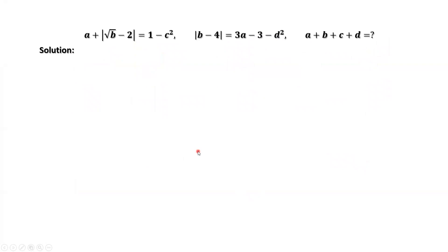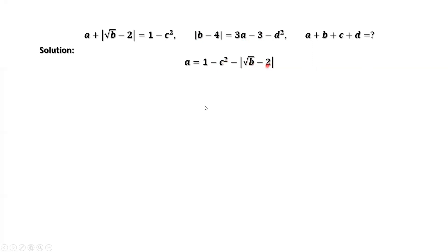From the first given equation, we solve for a. a equals 1 minus c squared minus the absolute value of the square root of b minus 2. In the second given equation, we replace a by 1 minus c squared minus the absolute value of the square root of b minus 2.